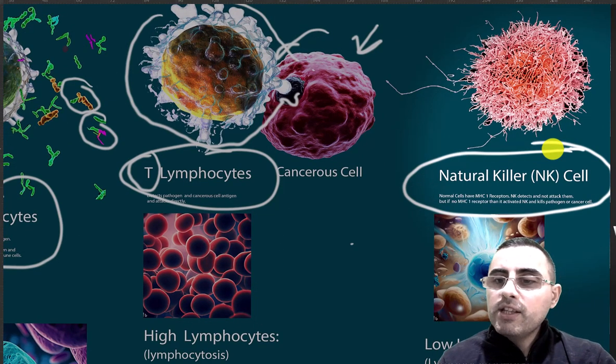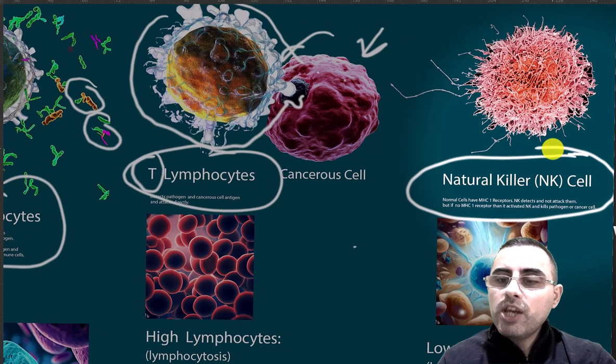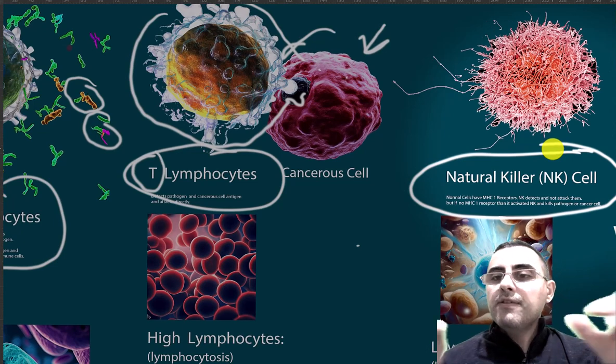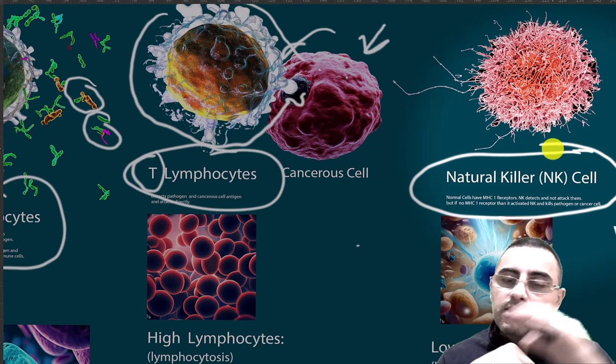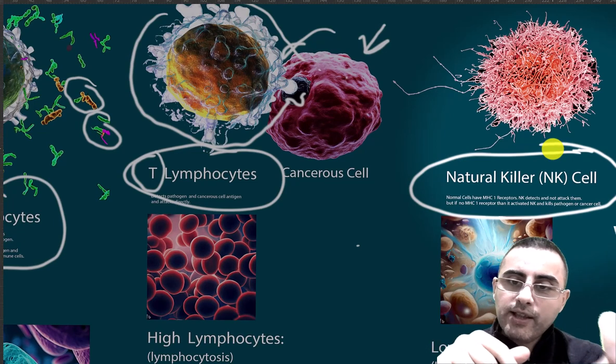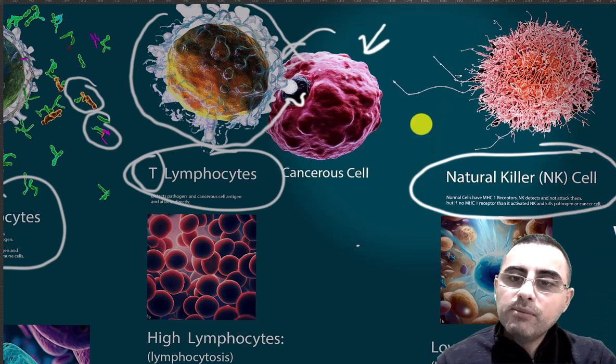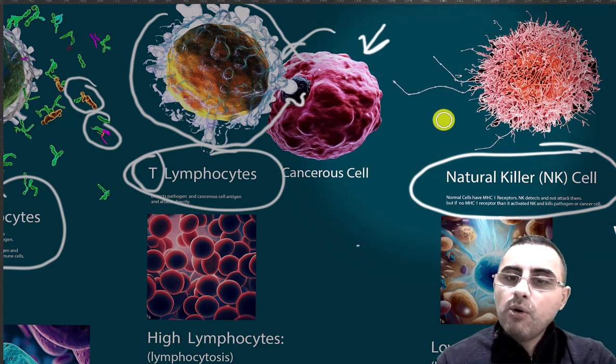Natural killer cells don't wait for antigens, antibodies, or other proteins. They simply check normal cells. If a cell is normal, it presents an MHC1 molecule on its surface.